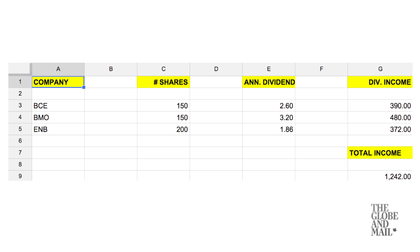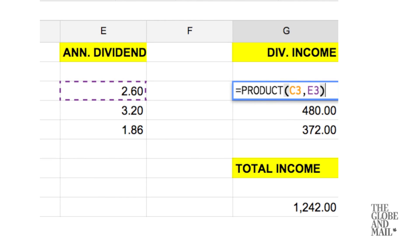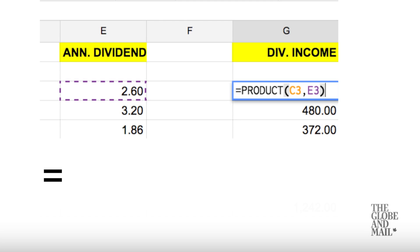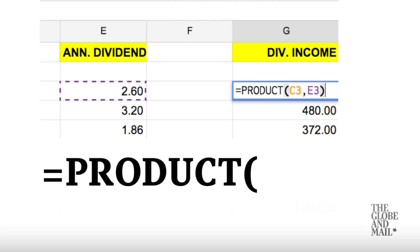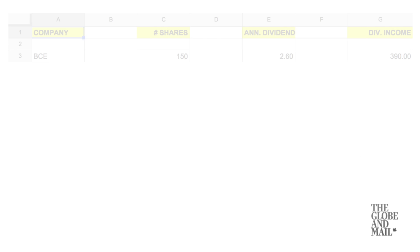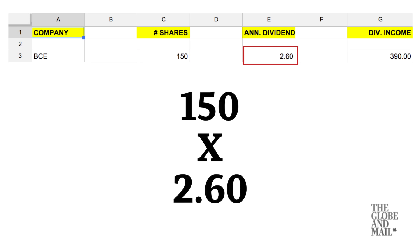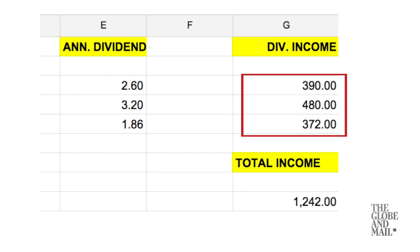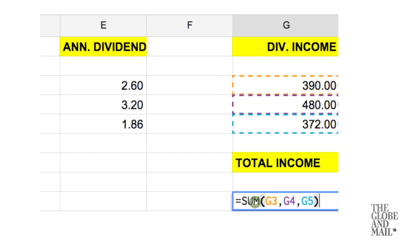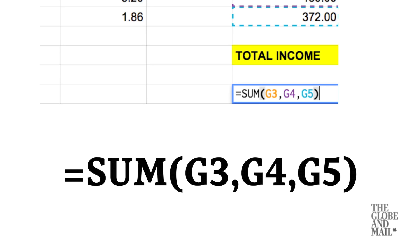I used a very simple formula to calculate this. If we click on this cell here, you can see that the formula is: equals PRODUCT(C3, E3). This formula multiplies the value in C3 — that is 150 shares — by E3, which is the annual dividend per share. The final step is to calculate your total income by adding up all the values in the dividend income column using the formula equals SUM(G3, G4, G5).